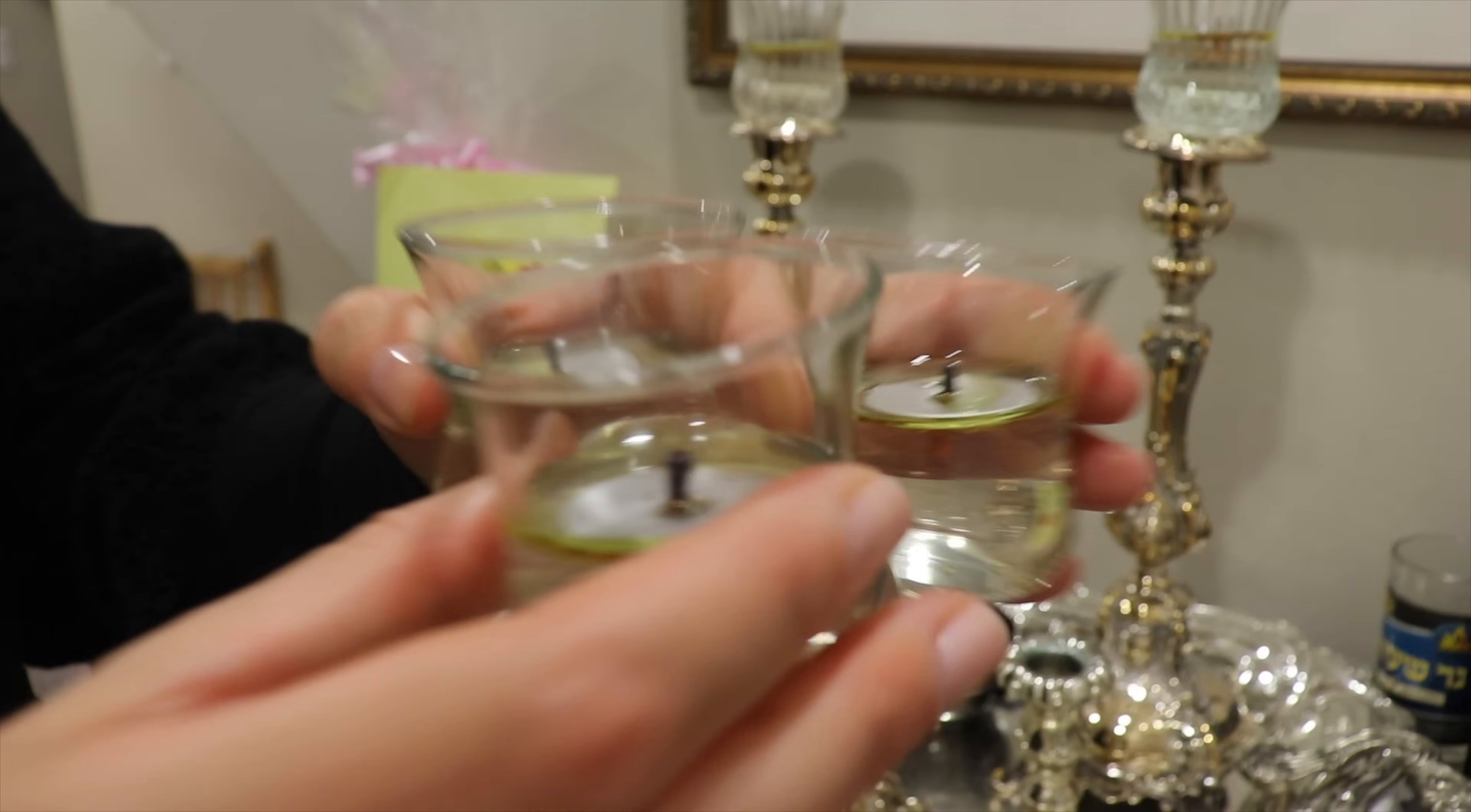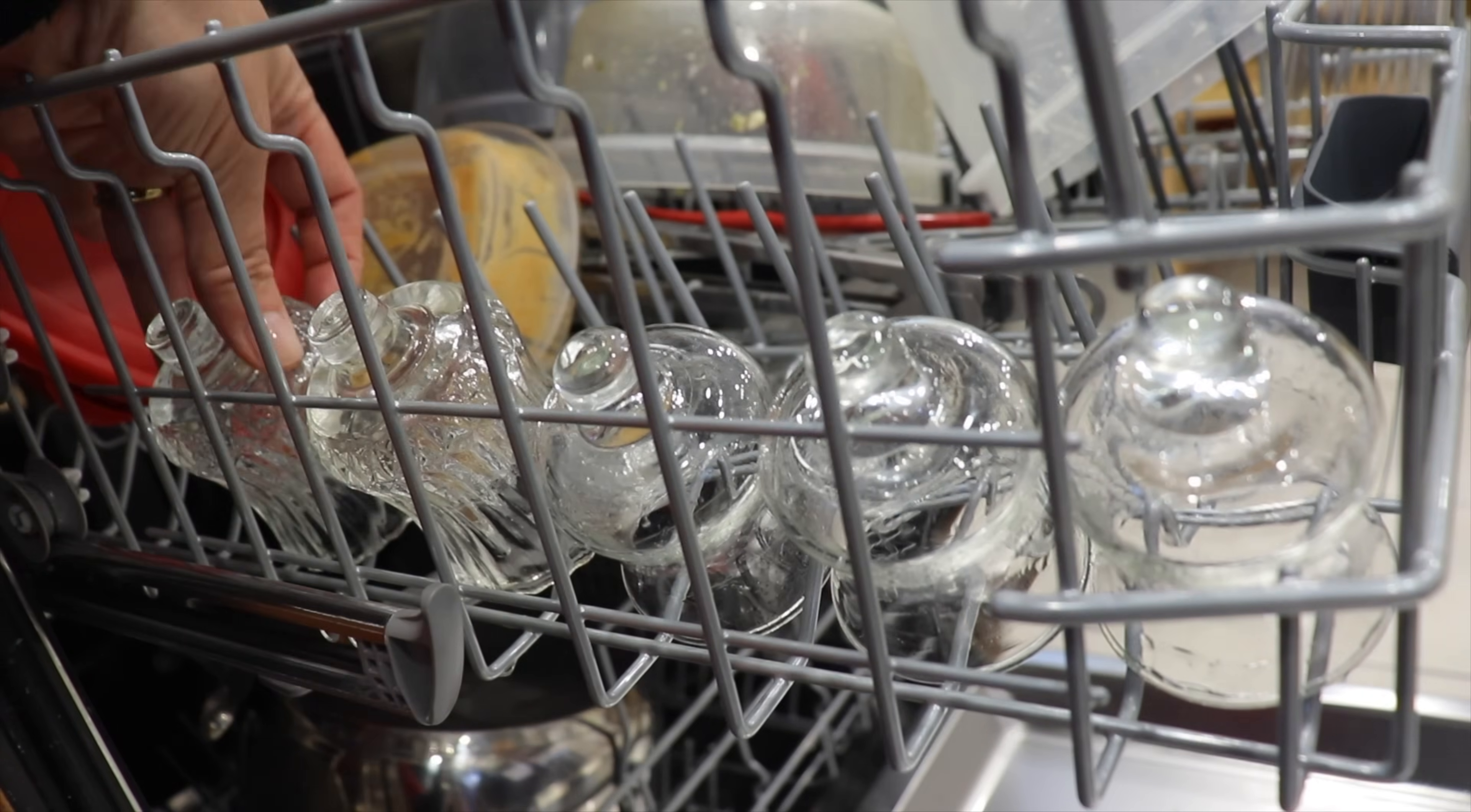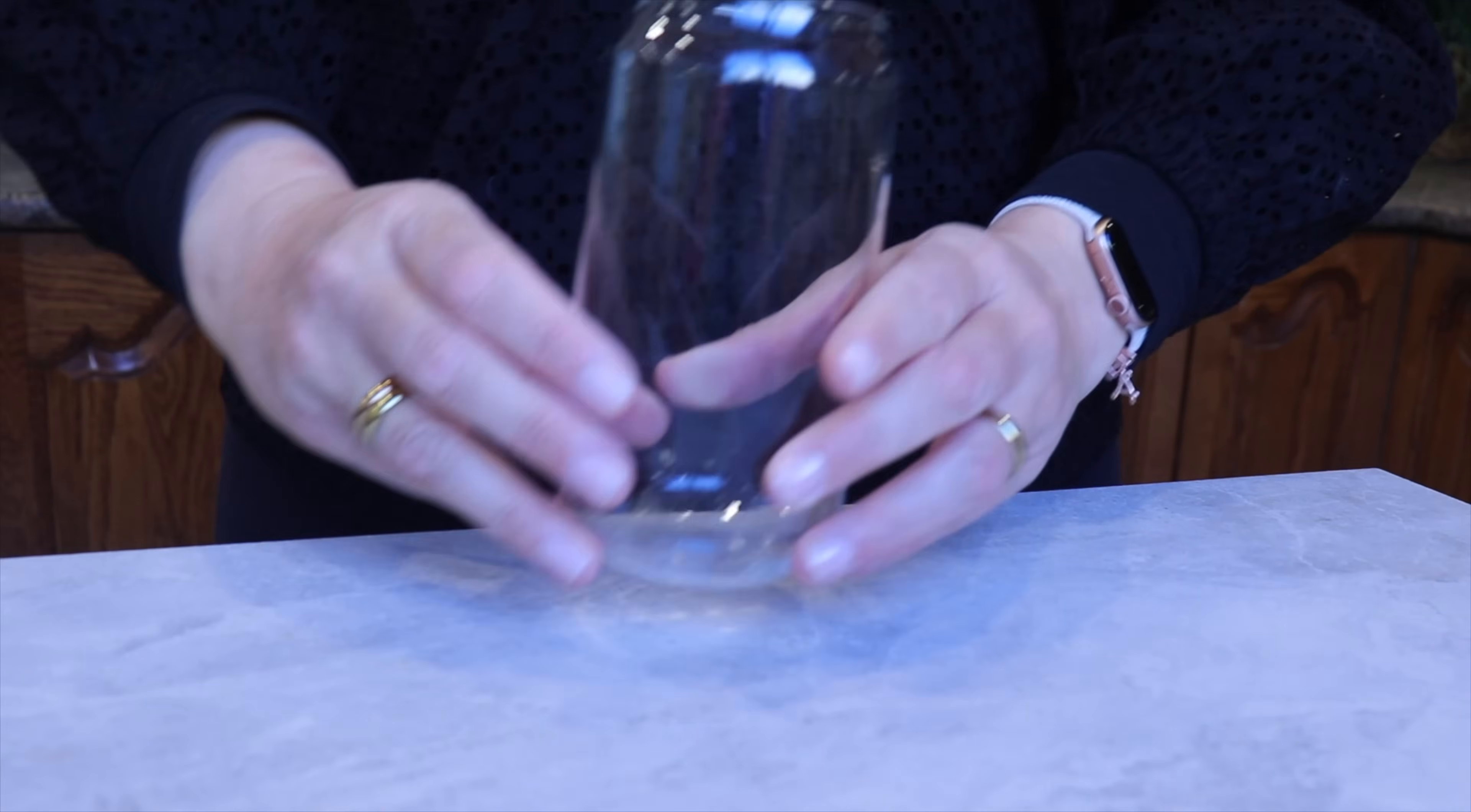Once I have emptied the glass cups, I will bring them in the kitchen and place them in the dishwasher. While I do this, Lea will bring back the candlestick holders and the platter in the cabinet.